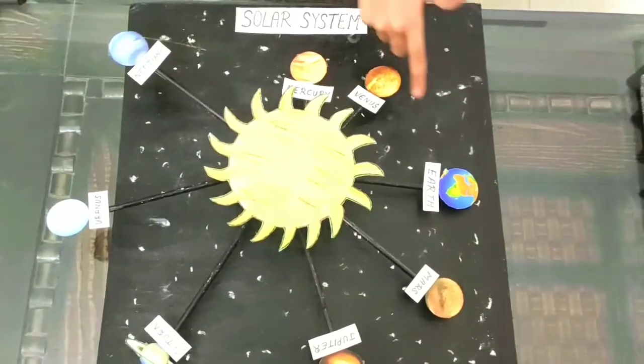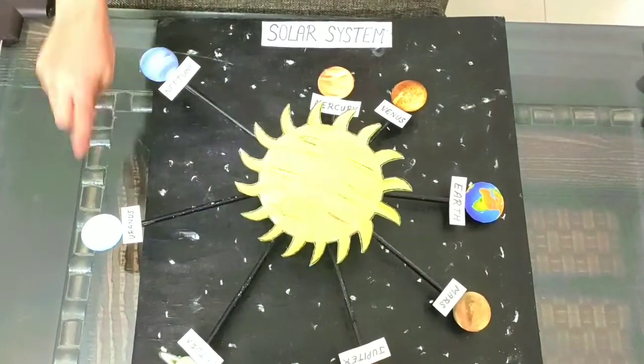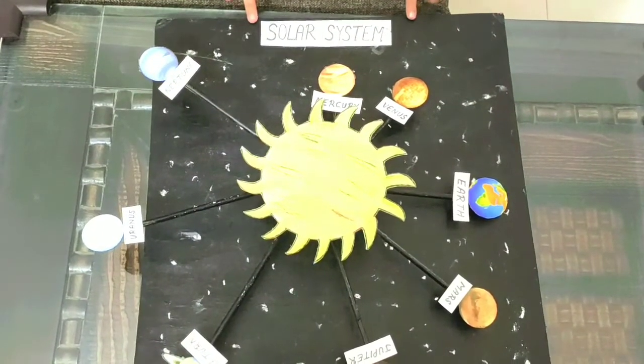Mercury, Venus, Earth, Mars, Jupiter, Saturn, Uranus, and Neptune. And I have the name of the solar system.